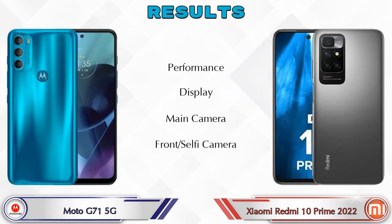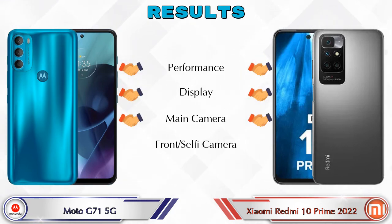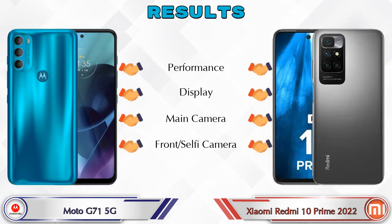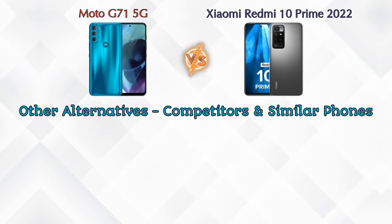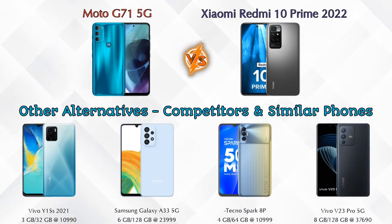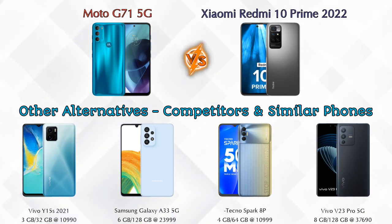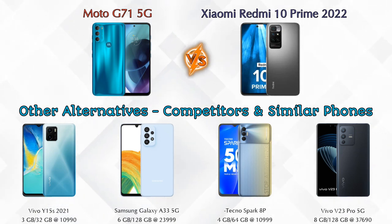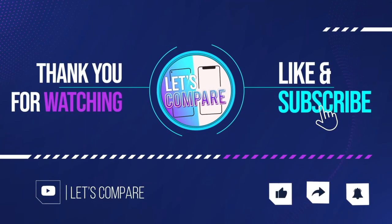For the results: in performance, display, main camera, and front selfie camera, both phones are rated the same. Now for other competitors at the same price: first is Vivo Y15s 2021, second is Samsung Galaxy A33 5G, third is Tecno Spark 8, and finally Vivo V23 Pro 5G. Details about all competitor phones are available in the description. If you liked our video, please like and subscribe. Thanks for watching.